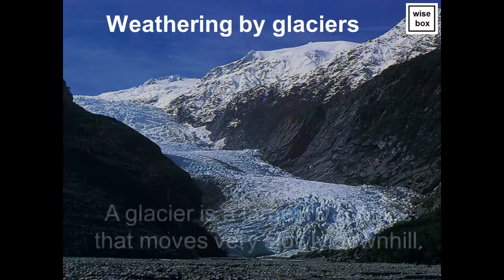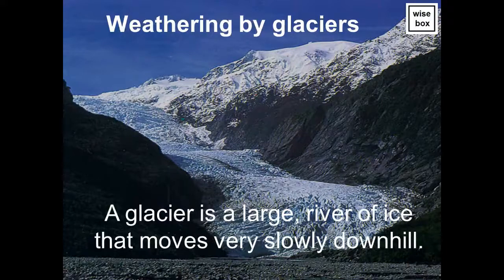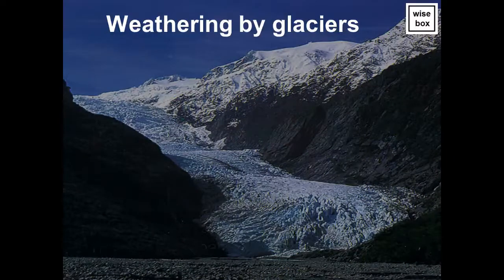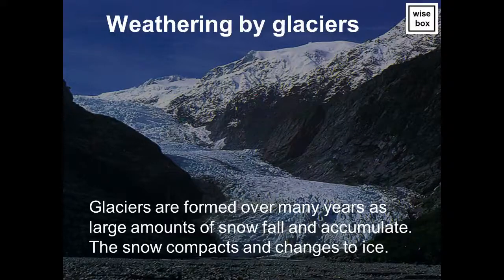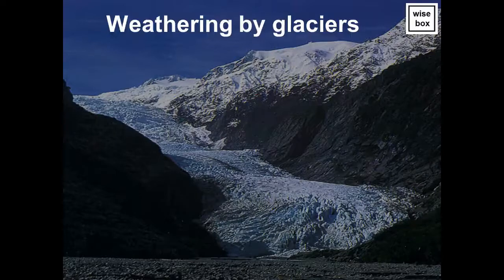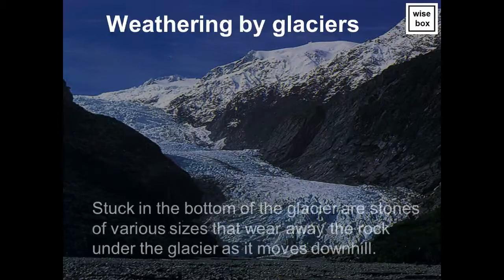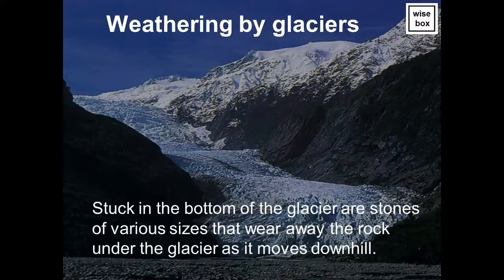A glacier is a large river of ice that moves very slowly downhill. Glaciers are formed over many years as large amounts of snow fall and accumulate. The snow compacts and changes to ice. Stuck in the bottom of the glacier are stones of various sizes that wear away the rock under the glacier as it moves downhill.